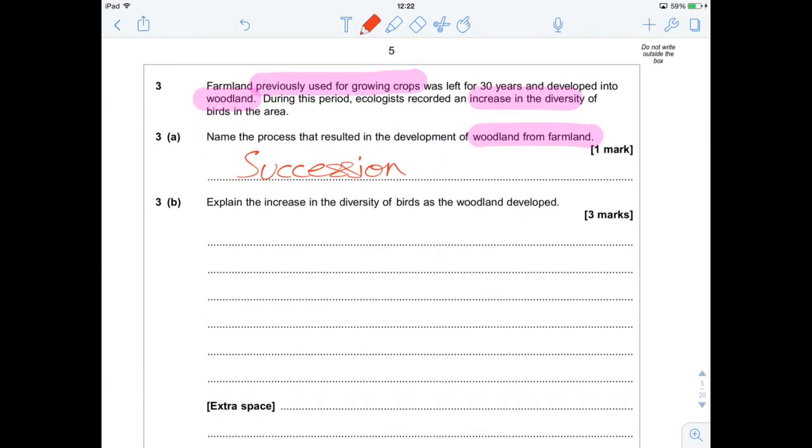The next question, a bit more tricky. Explain the increase in the diversity of birds as the woodland developed. Well, if there's a wider variety of plants, that means there's going to be a wider variety of habitats, of insects coming and living there, and that means more food and more niches for the birds to occupy. So let's structure that into a nice exam answer.